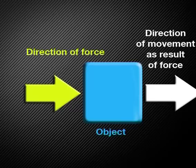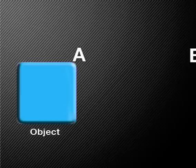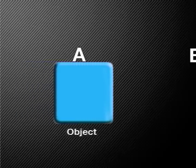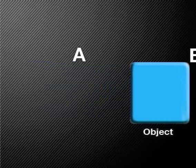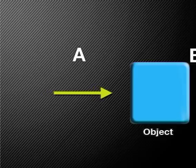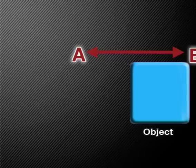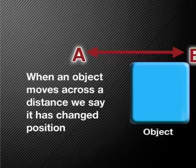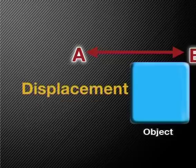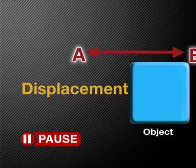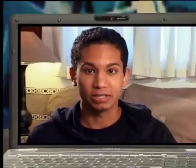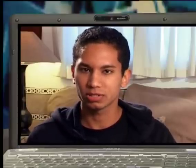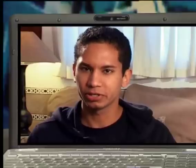Look at this graphic that illustrates the definition. Here we see an object that moves from point A to point B. It moves in the same direction as the force applied to it. Work occurs between A and B. When an object moves across a distance, we say it has changed position — this is also known as displacement. What do you think the definition tells us about work? Well, for work to be done, there must be: one, a force, and two, an object that moves in the direction of the force applied.